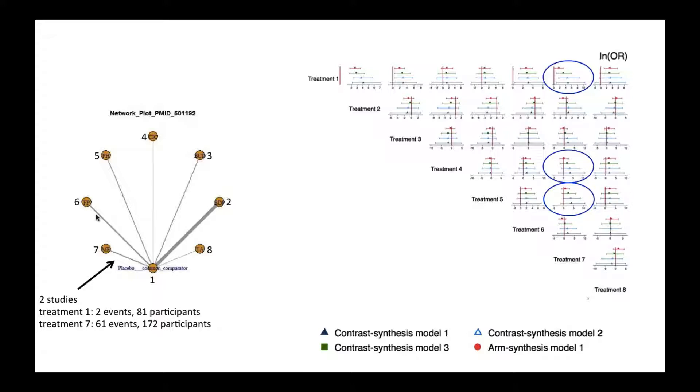In treatment 1, there were only 2 events from 81 participants, and from treatment 7, there were 61 events from 172 participants.